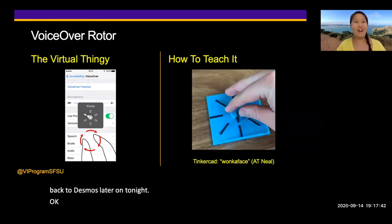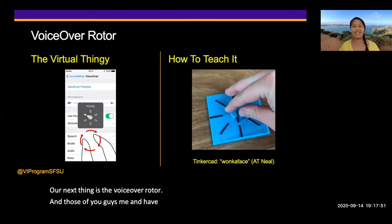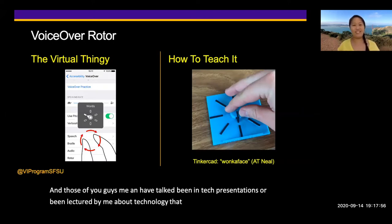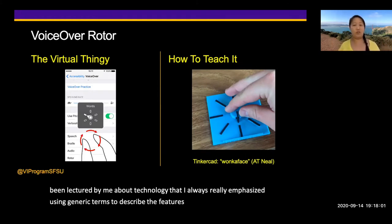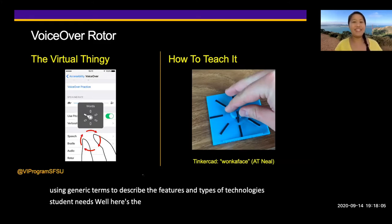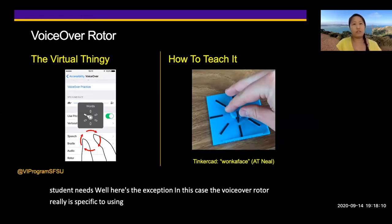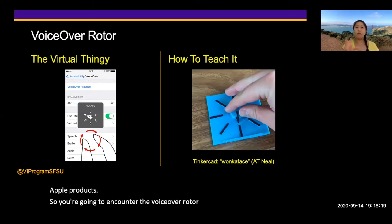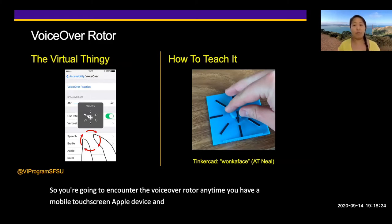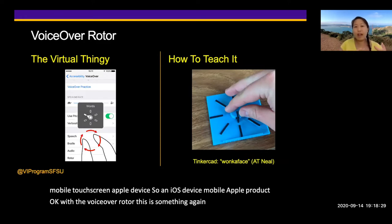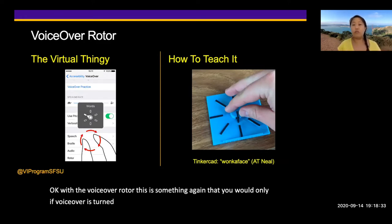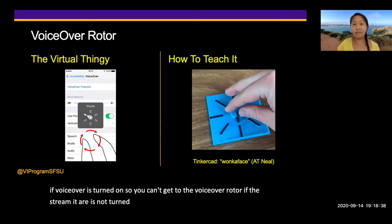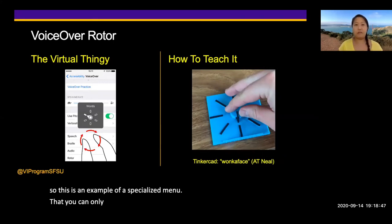Next is the VoiceOver rotor. I always emphasize using generic terms to describe features, but here's the exception — the VoiceOver rotor is specific to using VoiceOver, the screen reader for Apple products. You encounter it any time you have a mobile touchscreen Apple iOS device, and you can only access it when VoiceOver is turned on. It's an example of a specialized menu that only appears when that special tool is active.